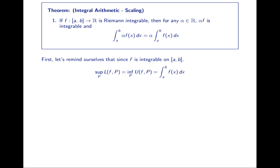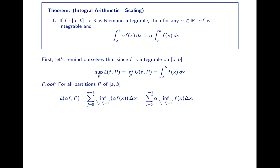The supremum over all partitions of the lower sums equals the infimum over all partitions of the upper sums, and that's equal to the integral. Basically we can just insert a scaling of alpha and everything is going to work the same. For all partitions, the lower sum of alpha·f is the sum of rectangular areas where the height is the infimum of alpha·f over each sub-interval and the width is the width of the sub-interval. We can scale out that alpha so that we just get a scaling of the lower sum of f.